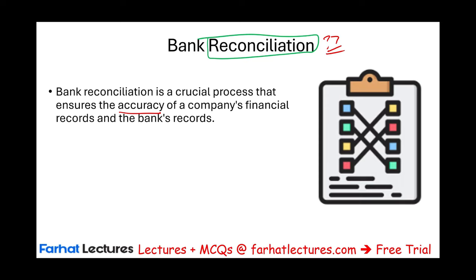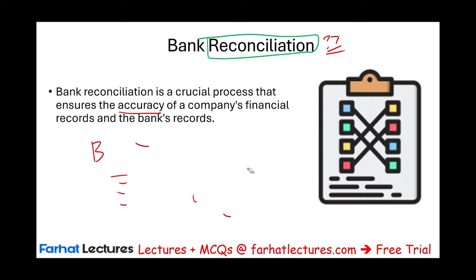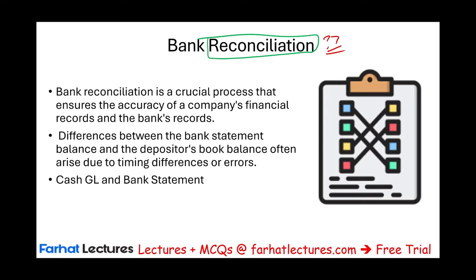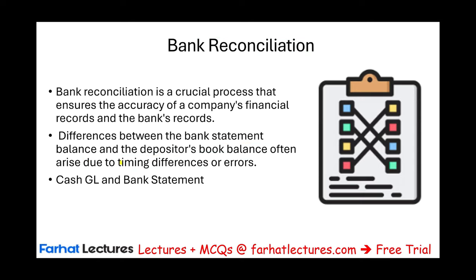When I was an auditor, I prepared at least five different bank reconciliations every week for different businesses that outsourced this process to their accounting firm. I would look at the bank record and reconcile it to the general ledger cash balance — everything on the cash balance should appear in the bank, and everything in the bank should be on the general ledger. Differences between the bank statement balance and the depositor's book balance often arise due to timing differences or errors — that's what we need to address.